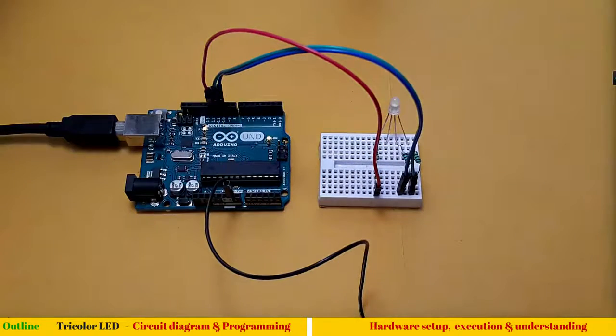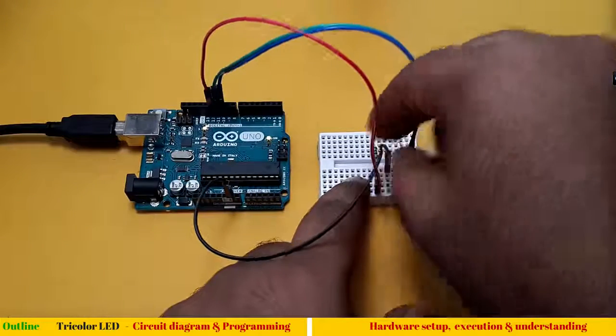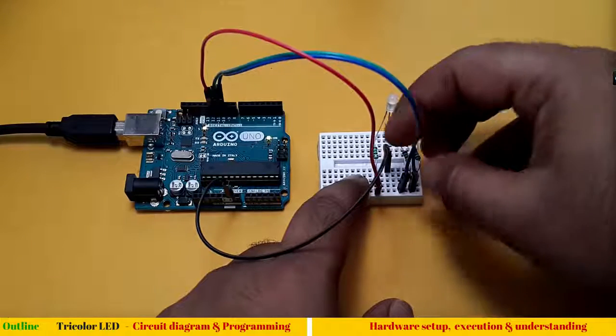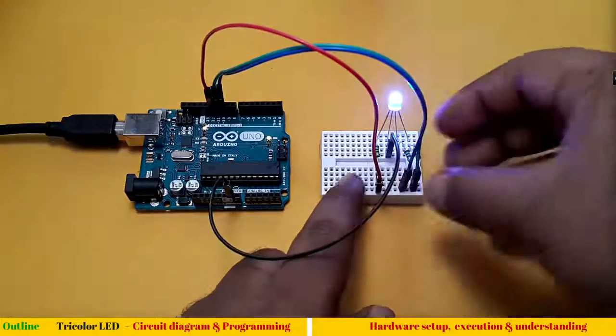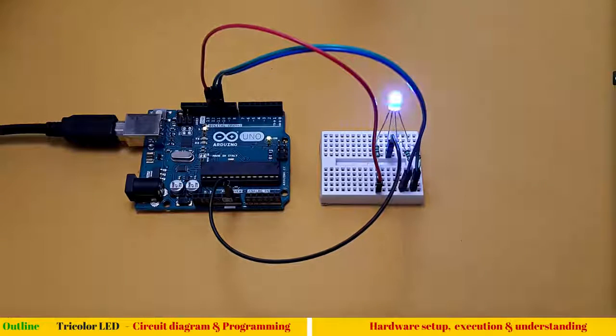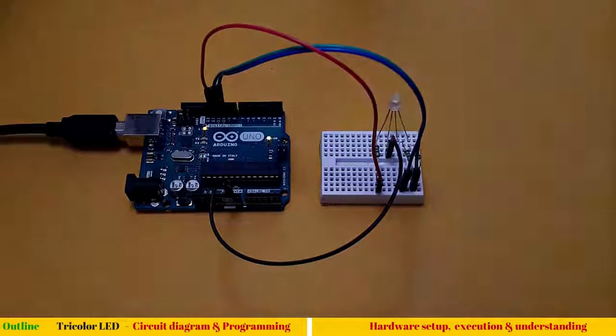Let me remove the ground wire for a while so that we can see that all LEDs glowing at once means glowing according to our program, is it correct? Yes. One more wire, the moment I connect the ground this circuit should work.